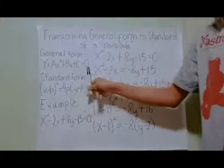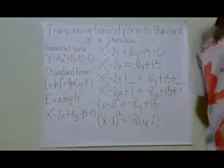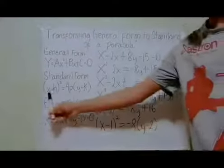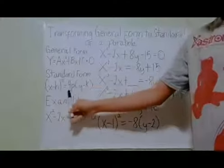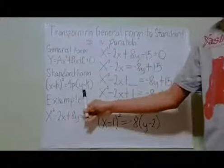Now, the general form of a parabola is y equals ax squared plus bx plus c equals 0, while the standard form of a parabola is quantity x minus h squared equals 4p, quantity y minus k.